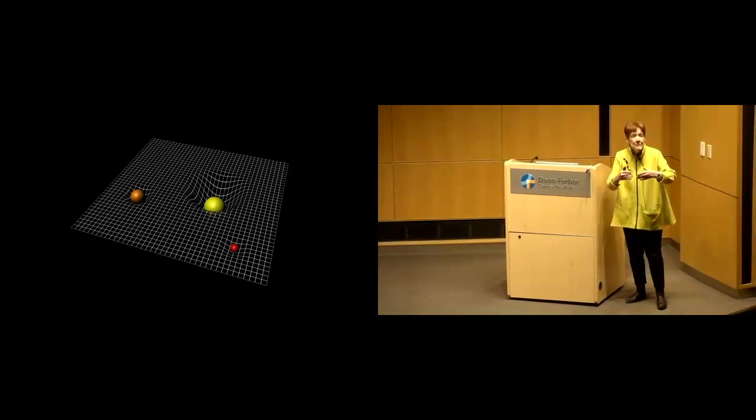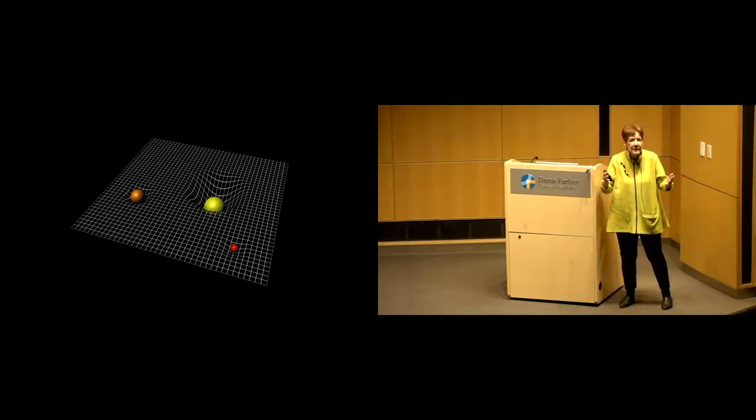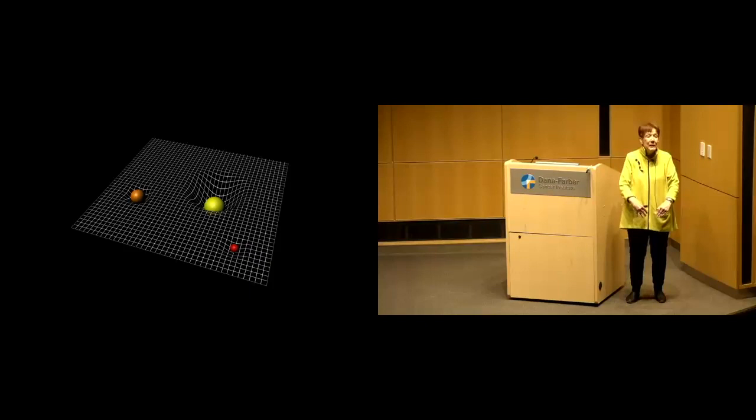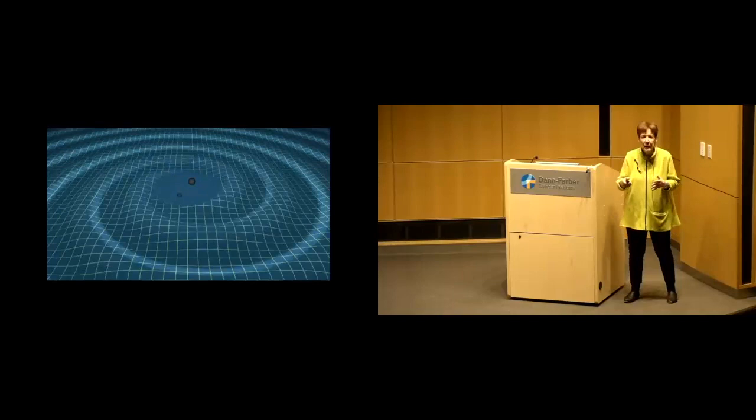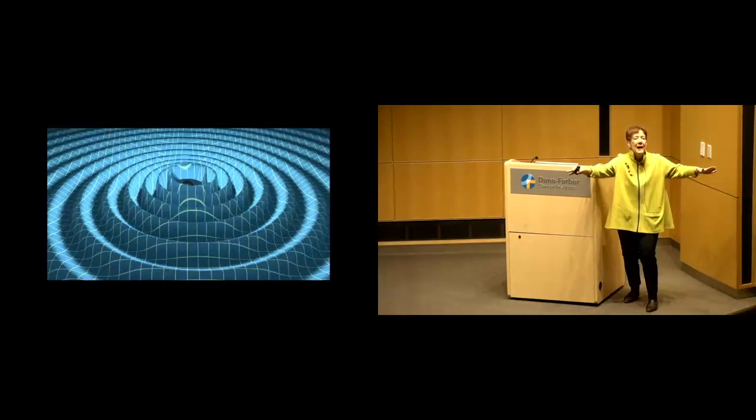He figured out that space and time join up together to form this flexible fabric. And big masses like stars, planets, the moons, indent this mass. And that's why we have our feet firmly planted on the ground, because we are just falling down that gravity well. And so Einstein went on with this model in mind, saying if two stars are circulating around one another, then they should send out ripples on that space-time fabric, just as if you threw a stone into a pond and the ripples went outward, you would have these gravity waves.